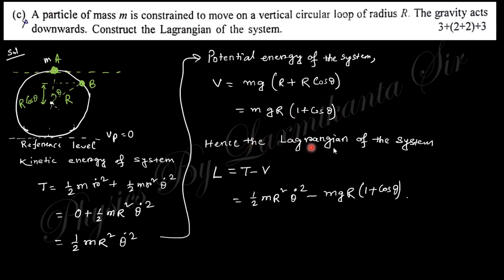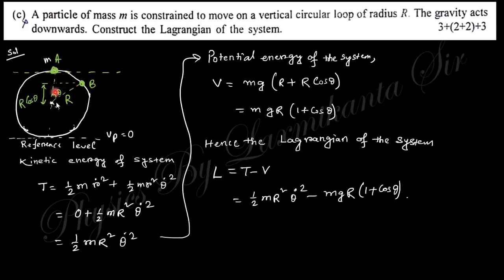Hence the Lagrangian L = T − V is obtained by substituting the kinetic energy and potential energy expressions. This gives the Lagrangian in terms of θ and θ̇, where R is a constant. Note that θ is the angle measured from the vertical line.